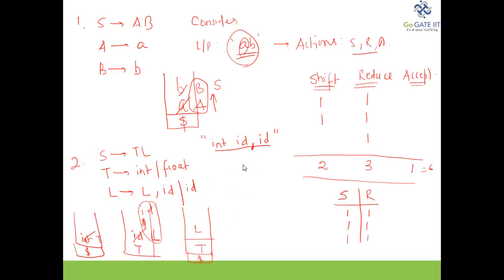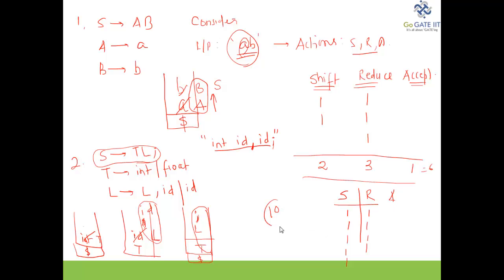There is one more symbol — semicolon — which also appears in the grammar. One more shift action takes place for semicolon, and then this complete set can be reduced. One more reduce action. Total: six shift actions, four reduce actions, and one accept — ten actions in total.